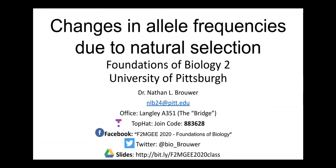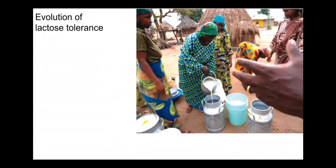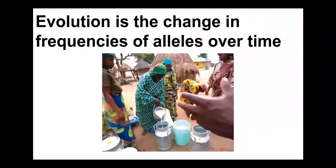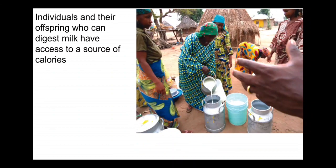In this presentation I'll be talking about how allele frequencies can change due to natural selection. Evolution is change in frequencies of alleles over time — any change counts as evolution — but often we are very interested in changes that are adaptive, that increase an organism's fitness, so then we're talking about natural selection.